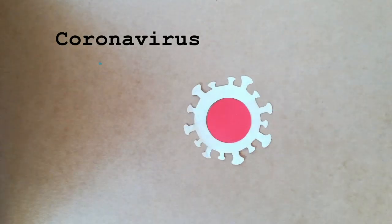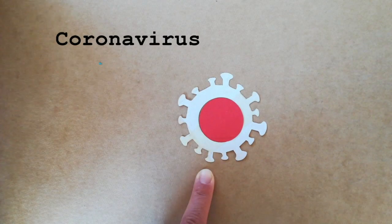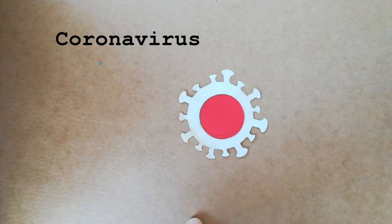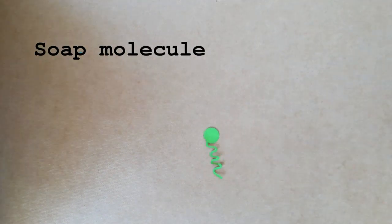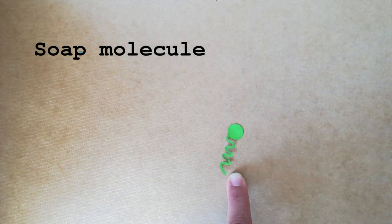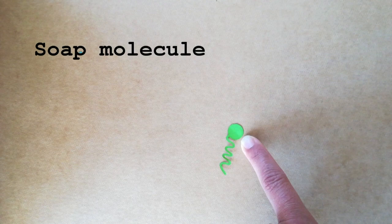This is a coronavirus. The coronavirus has a cover of fats. This is a soap molecule. A soap molecule exists out of two parts. The tail that binds with fats, and the head that binds with water.